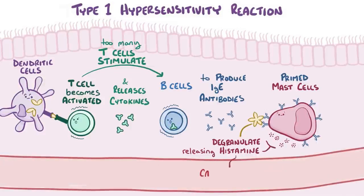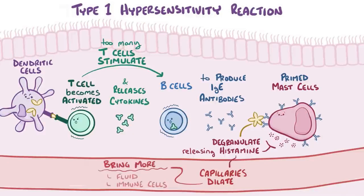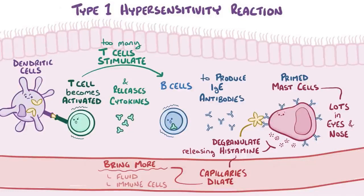The histamine causes blood capillaries to dilate and become leaky, which brings more fluid and immune cells to the area where the mast cells are located. Because the eyes and nose are portals of entry for infections, there are lots of mast cells around those areas for extra protection. So those IgE-primed mast cells release their histamine, which causes nearby capillaries to dilate, flooding the facial tissues with fluid.